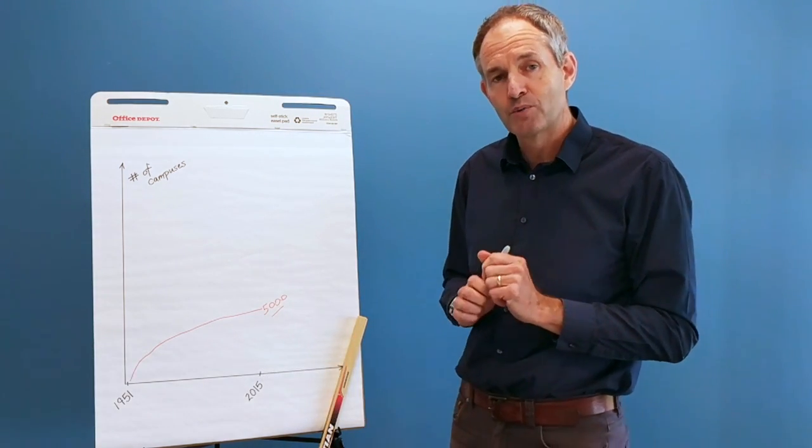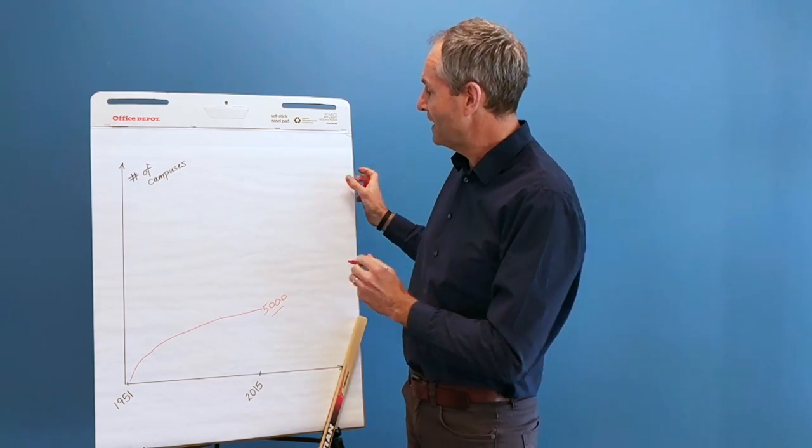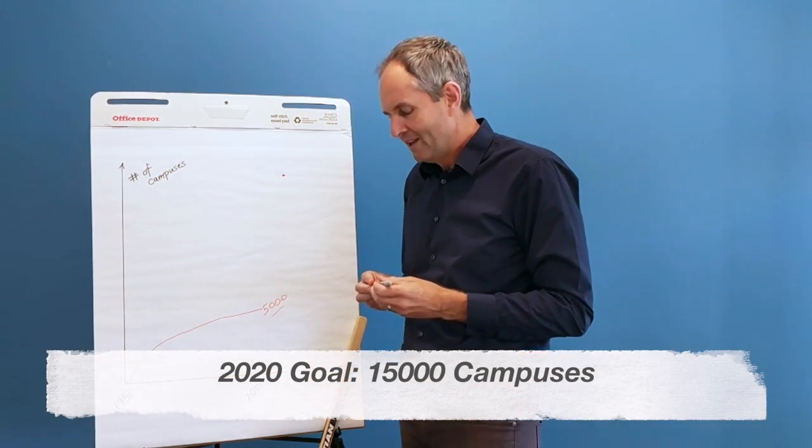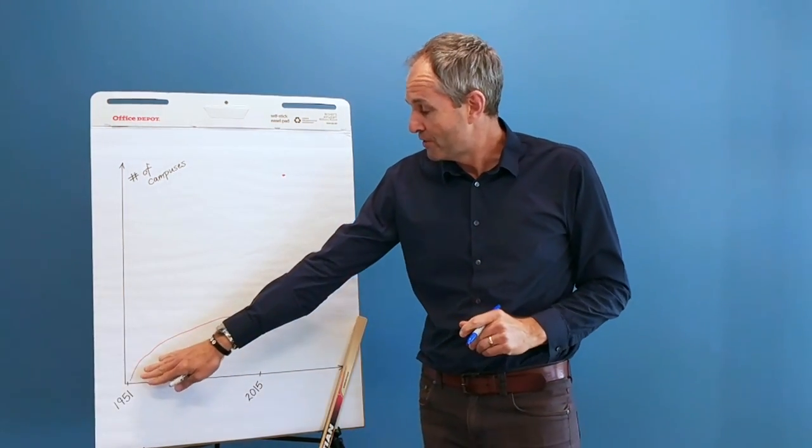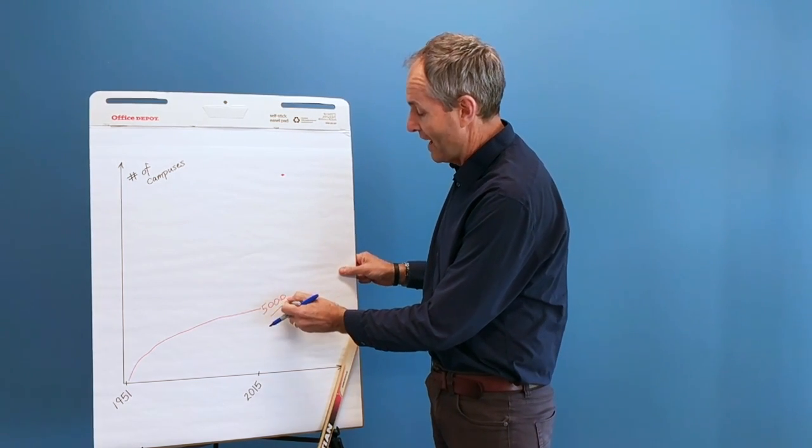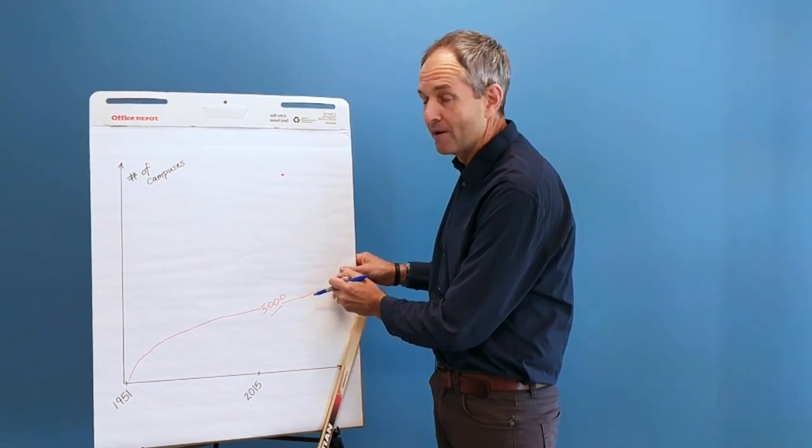Now, we set a goal by 2020 to be on 15,000 campuses, which would be up here. So you'll see, as we can look at our growth over the years, if we are to continue the rate of growth that we are at, we're going to end up somewhere out here.